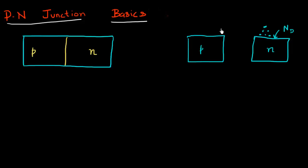Similarly, in P type semiconductor, we add acceptor atoms which have one less electron than what is needed to complete the bonding in the lattice. So that produces an absence of electrons, which are represented as the holes present in the valence band.